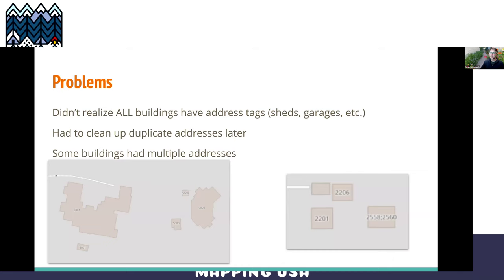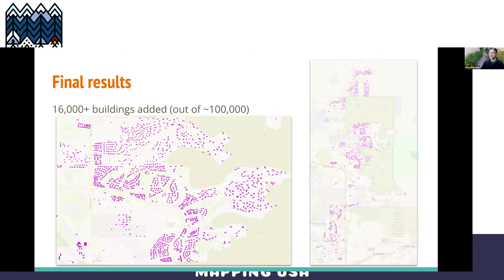I did have some issues. I didn't realize that every single building in a lot would have the same address tag on it, including carports, garages, and sheds. It's not that big of a deal, but I don't really like that, so I went through and cleaned up a lot of those duplicate addresses. Also, some buildings had two addresses per building with a semicolon between them, and I had to go in and figure out which was the correct address.